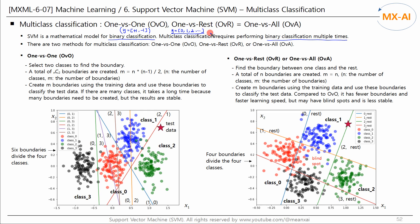There are two methods for multi-class classification. One is 1v1, shortly OVO. The other is 1vRest, OVR, or 1vAll, OVA.